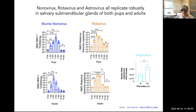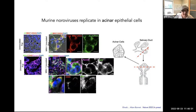Some might think this saliva is still just a contaminant from the gut. So we looked at the salivary glands in animals infected with norovirus, rotavirus, or astrovirus — in pups or adults — and found robust replication of these viruses within the salivary glands themselves. This told us the salivary glands can be infected with these viruses and can release infectious virus into saliva. Within the salivary gland, noroviruses replicated primarily in the acinar epithelial cells and in immune cells, while rotaviruses replicated primarily in the ductal epithelial cells — an interesting tropism difference between the two viruses.